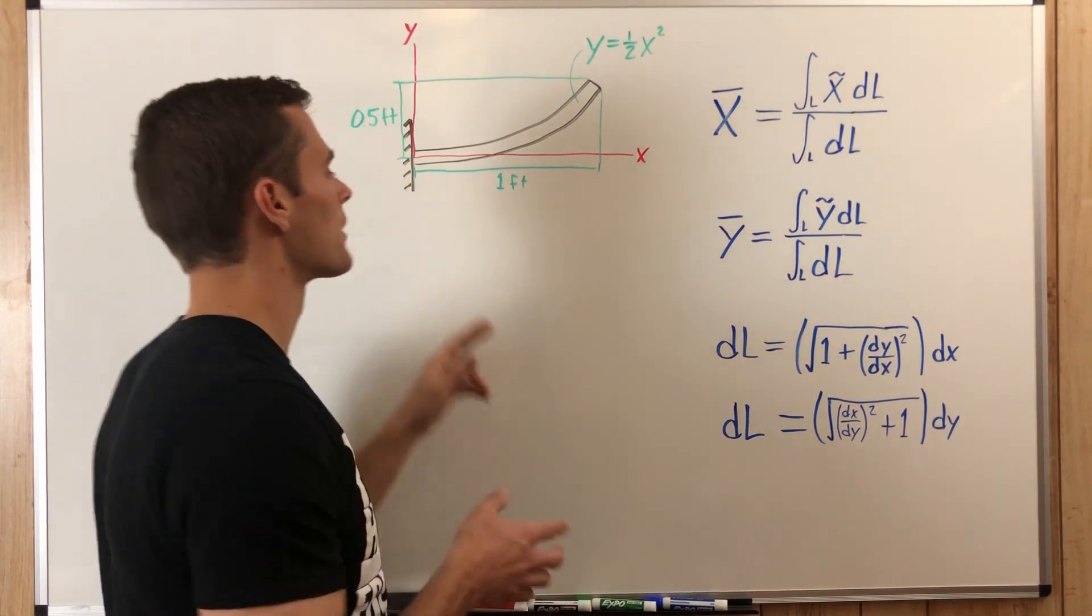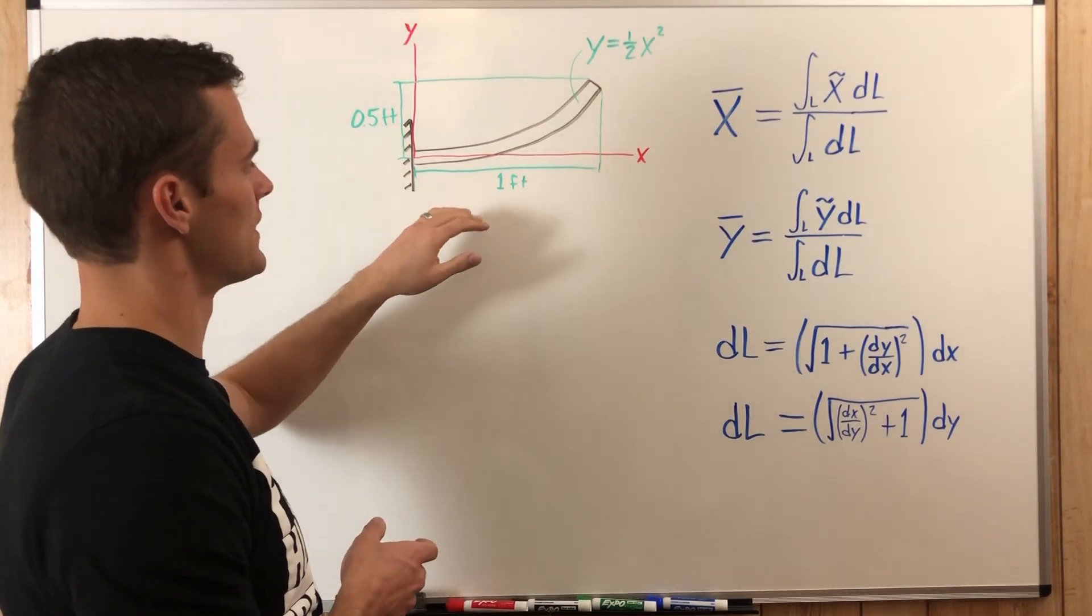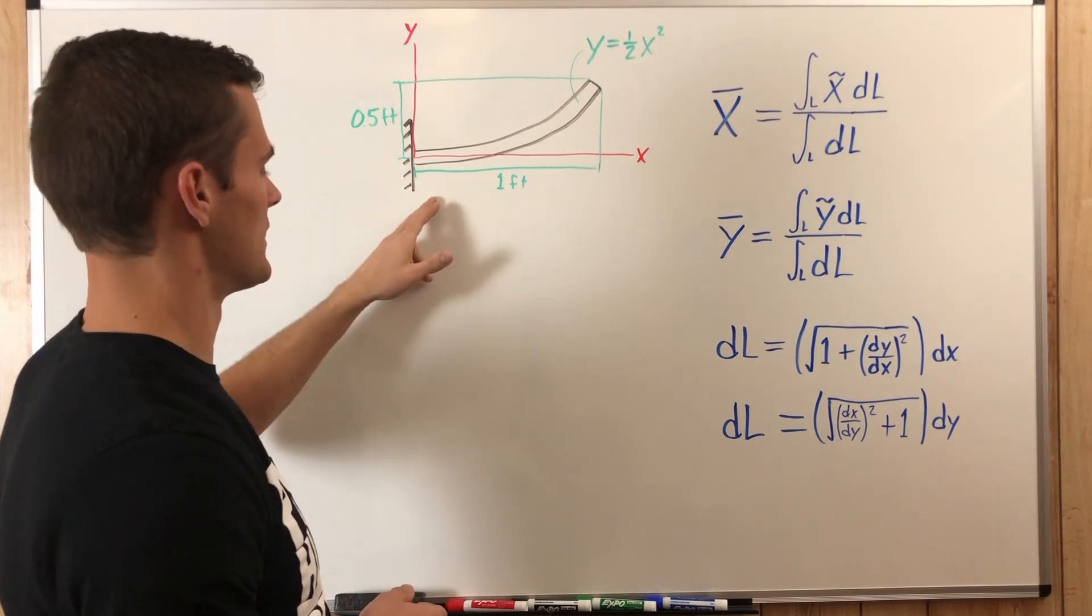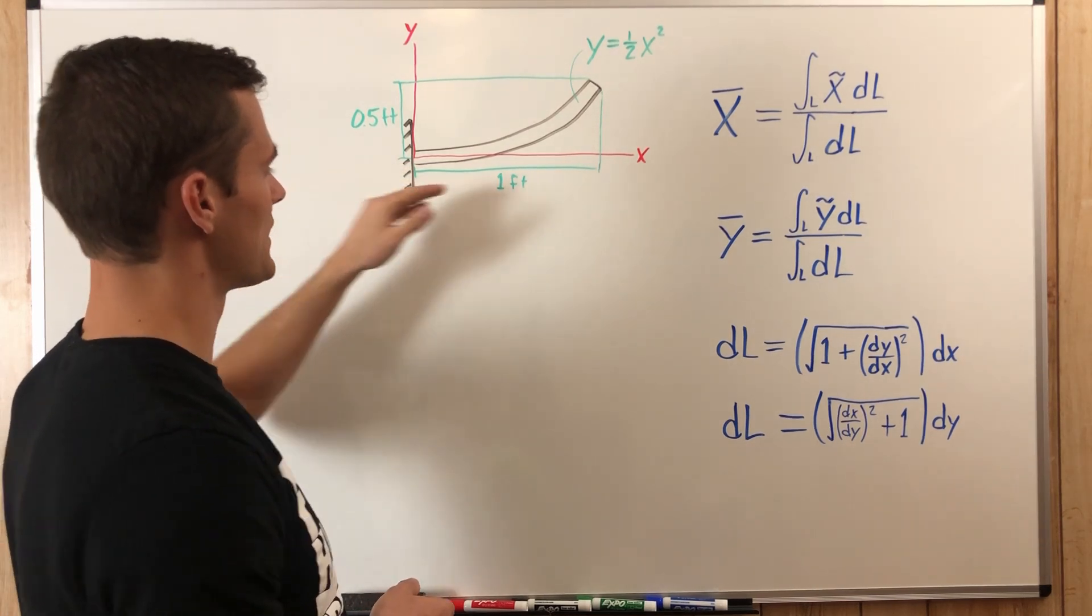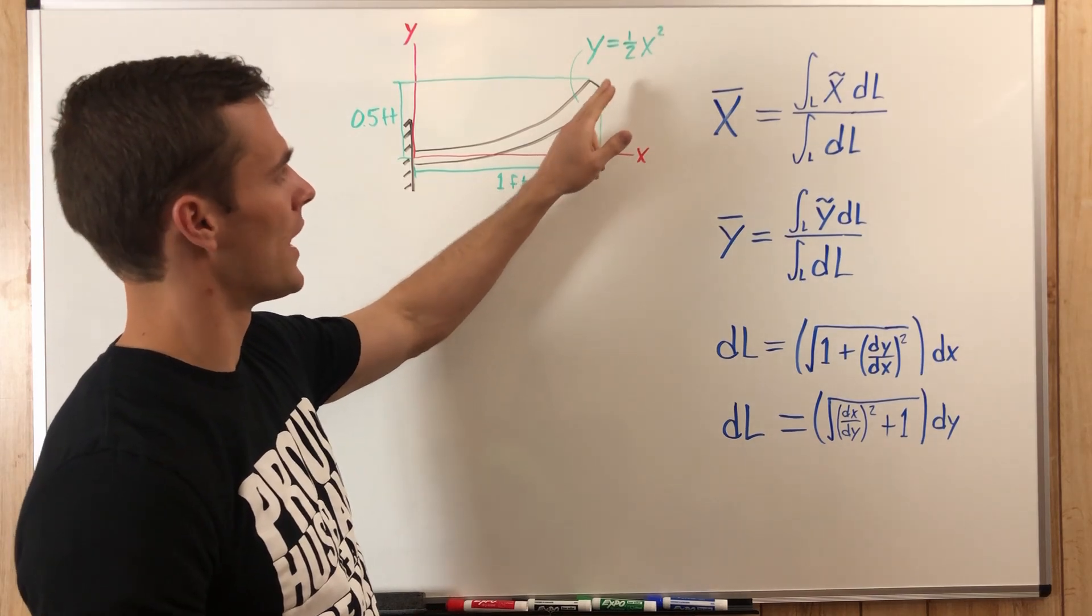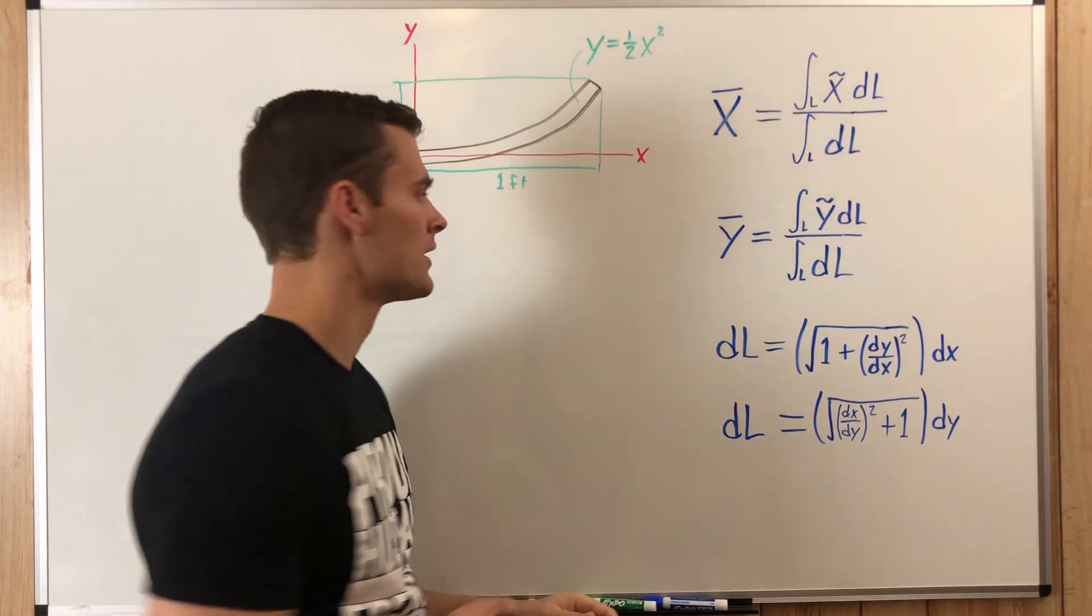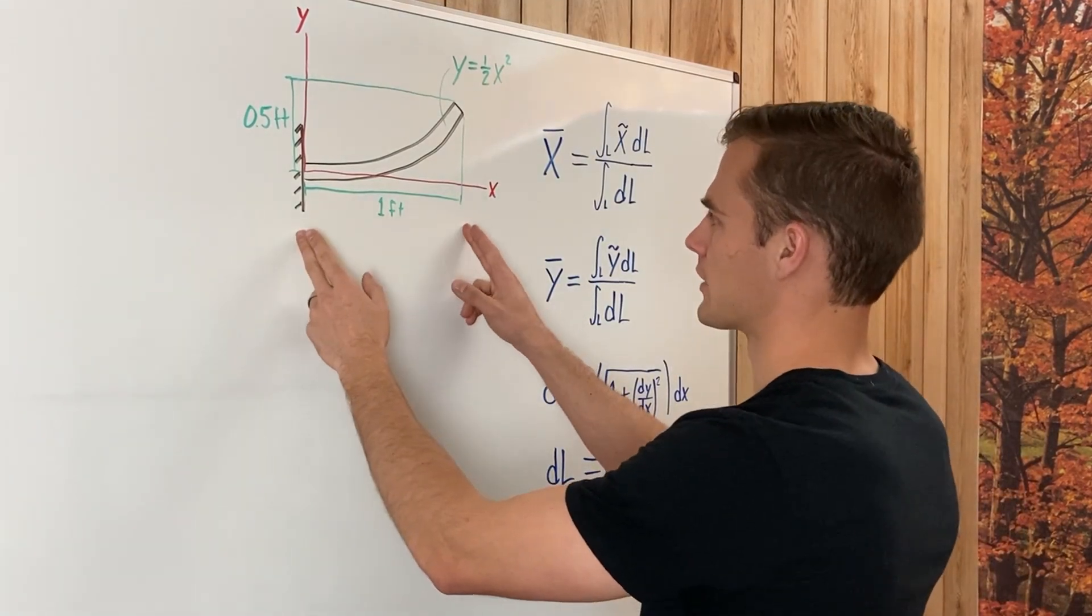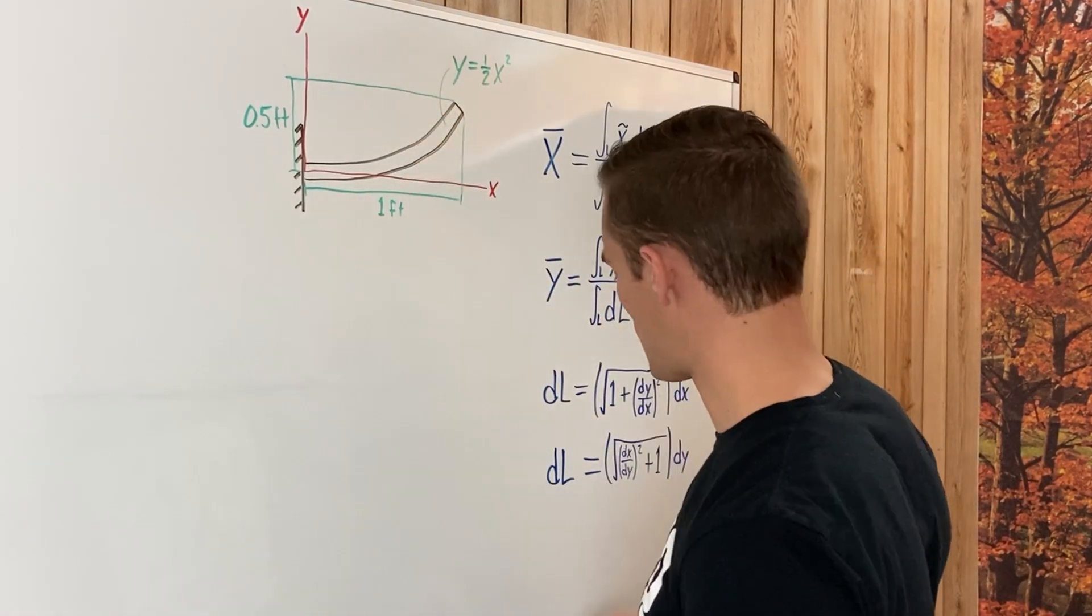So now we're going to solve for the center of gravity of this rod. And it is bent in the shape of the equation y equals one-half x squared. So it is one foot in the x direction and a half a foot in the y direction.